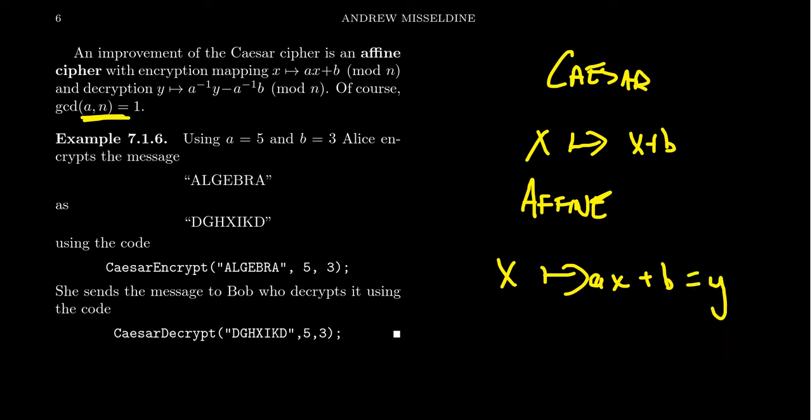So if y equals ax plus b, then we subtract b from both sides. We get ax equals y minus b. And we divide both sides by a. So we get x equals a inverse y minus a inverse b. And therefore, we can decrypt this process.